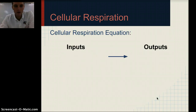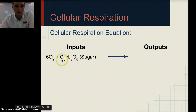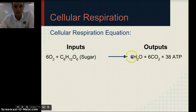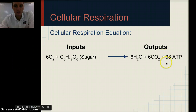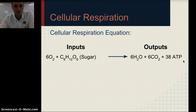Let's take a look at the equation for cellular respiration. Our inputs are six oxygen and one sugar molecule, C6H12O6. Our outputs are six water, six CO2, and 38 ATP. This is the end result, and this is why cellular respiration is so important — our cells need that ATP in order to function. That's the energy or currency that allows cells to do work.